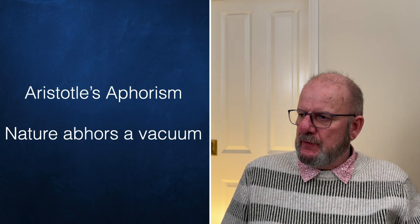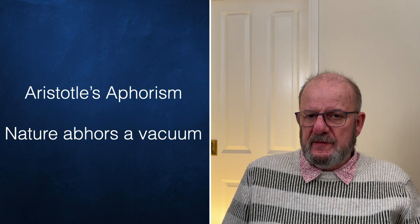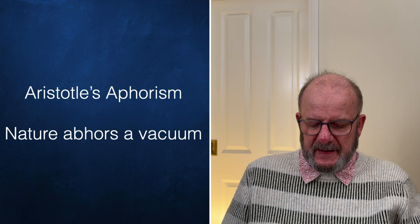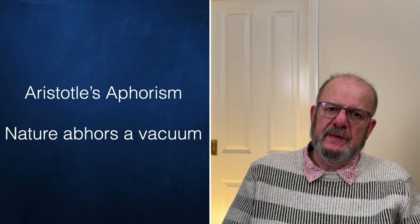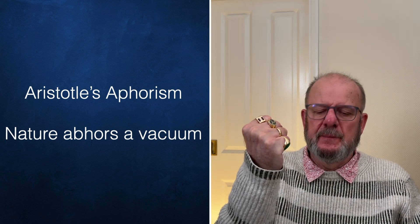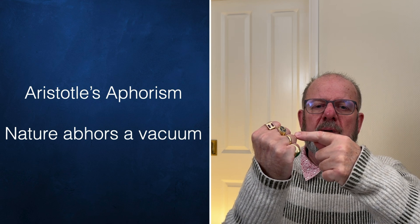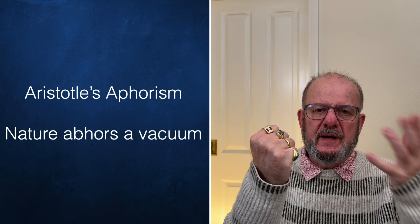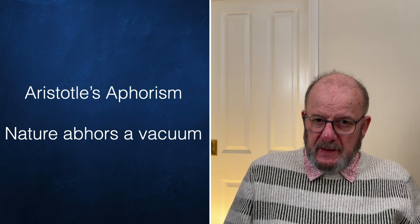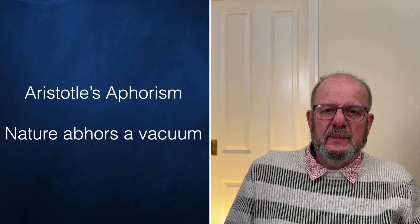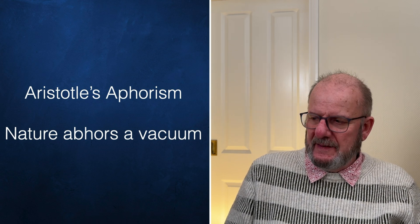Aristotle is famous for his aphorism 'nature abhors a vacuum.' Aristotle meant that it's impossible for a vacuum to exist, and he had several reasons for this. One of them is quite intuitive: imagine we have a vacuum and at the edge of the vacuum something moves into it — it travels at infinite speed and therefore fills the vacuum in zero time.